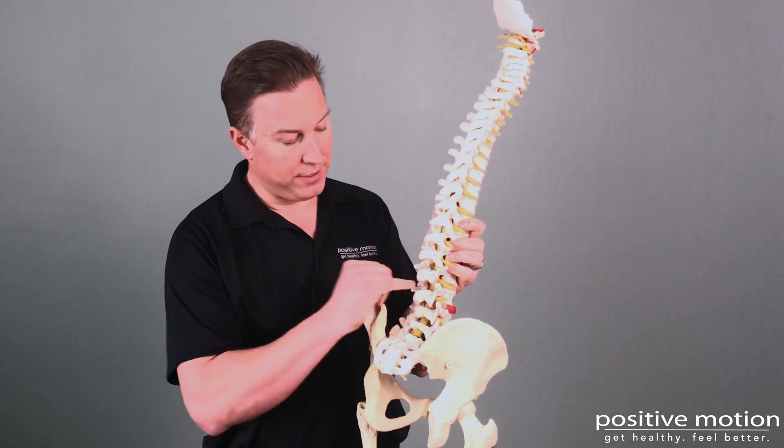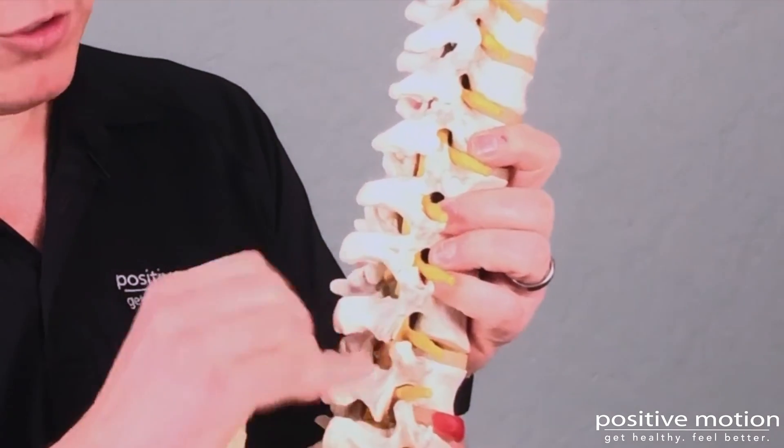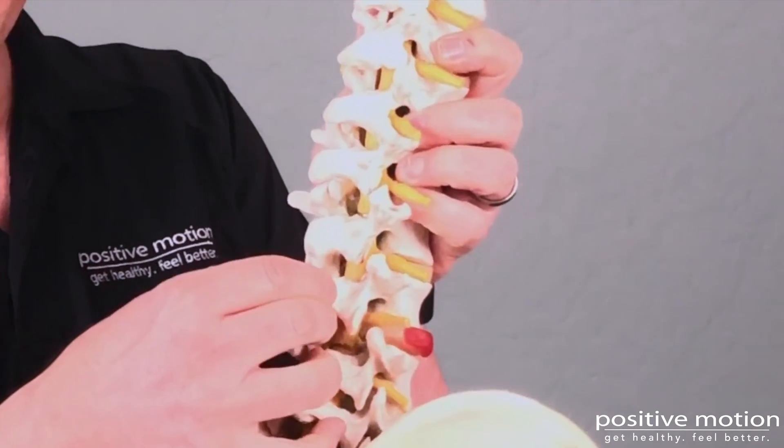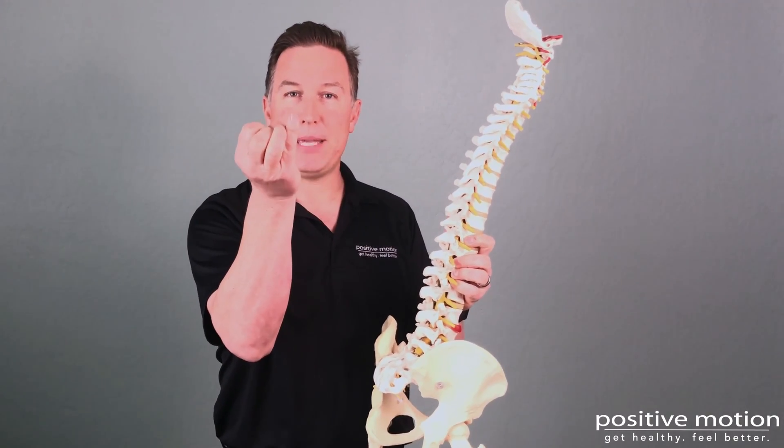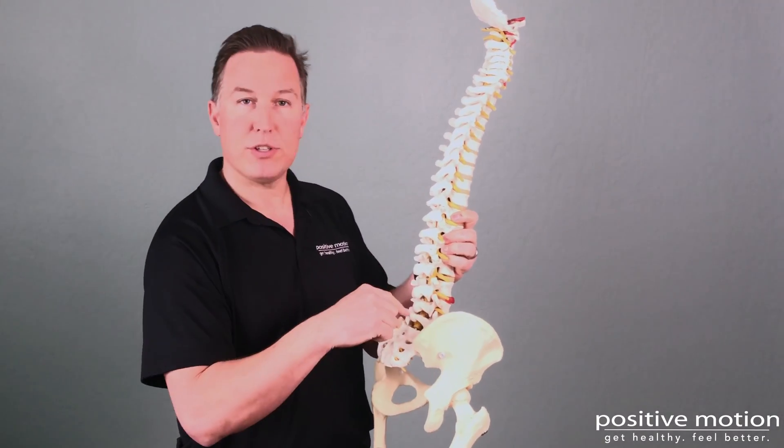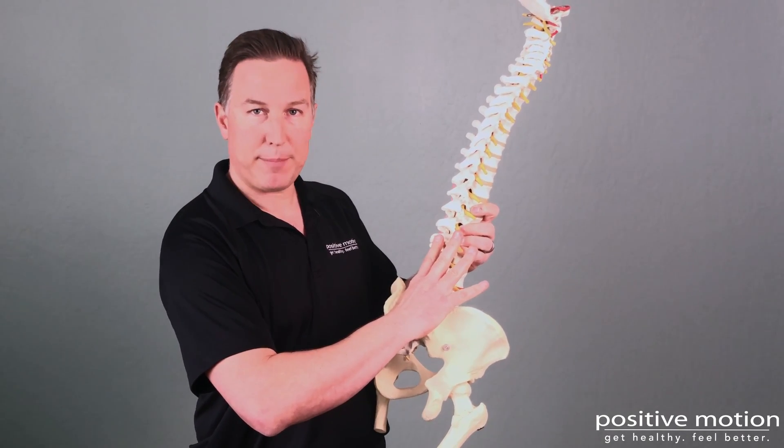On the back of the spine here, we see these little joints. These joints are called your facet joints. You can see it moving there. Facet joints, they're about the size of my pinky. And the muscles around your low back, there's a lot of them, but they're small like my fingers.